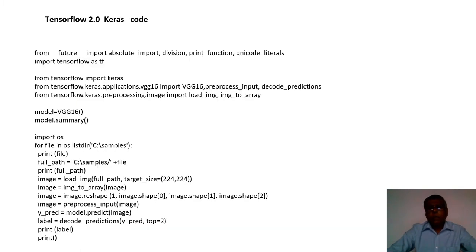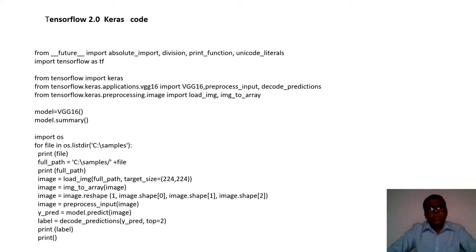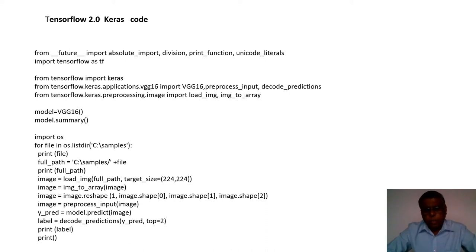VGG16 is a pre-trained model that can be reused for our own purposes with the trained parameters. We just specify the model as VGG16 and then use model.predict on images in our hard disk — the model will identify the objects because it was already pre-trained on ImageNet objects.